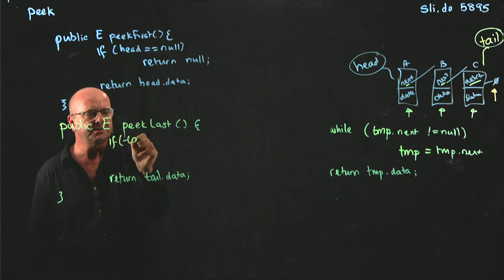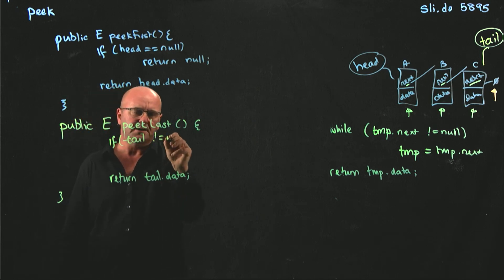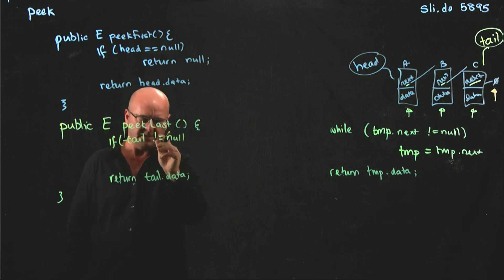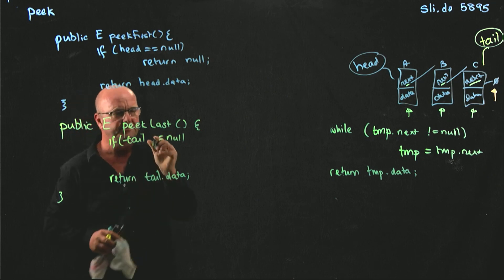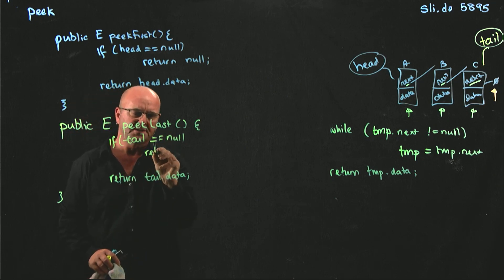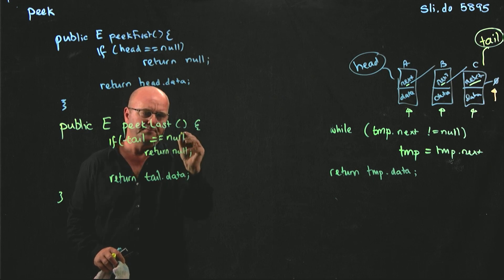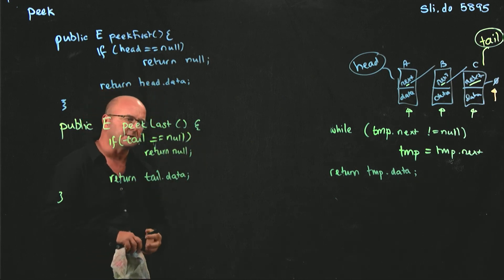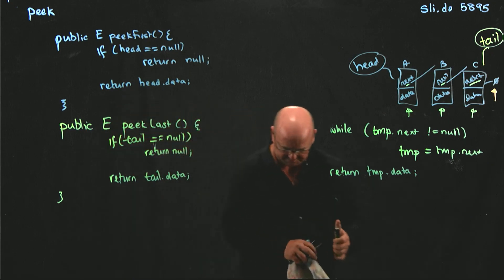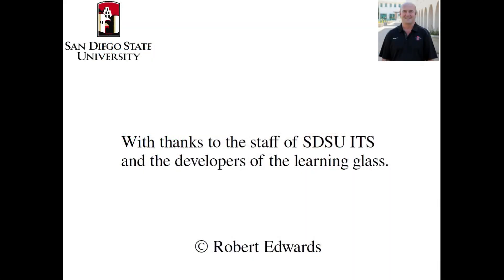And we can also do that using tail. If tail is equal to null, return null. Otherwise, return tail.data, so we don't get a null pointer exception. Thank you.